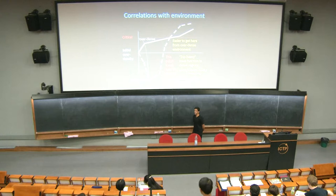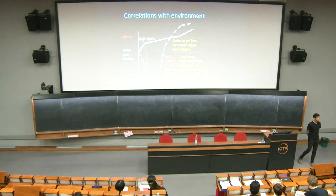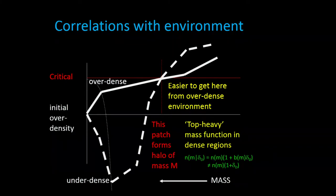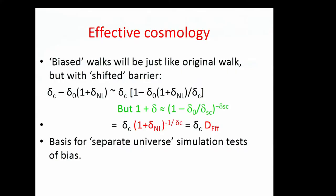A quick recap: we set up the excursion set approach — the random walk picture — for estimating halo abundances. The idea is that if you are in an over-dense region you end up with more massive halos than in an under-dense region, because it is harder to cross the critical threshold for collapse. Dense regions have an effective positively-curved (closed) cosmology, and under-dense regions have an effectively open cosmology.